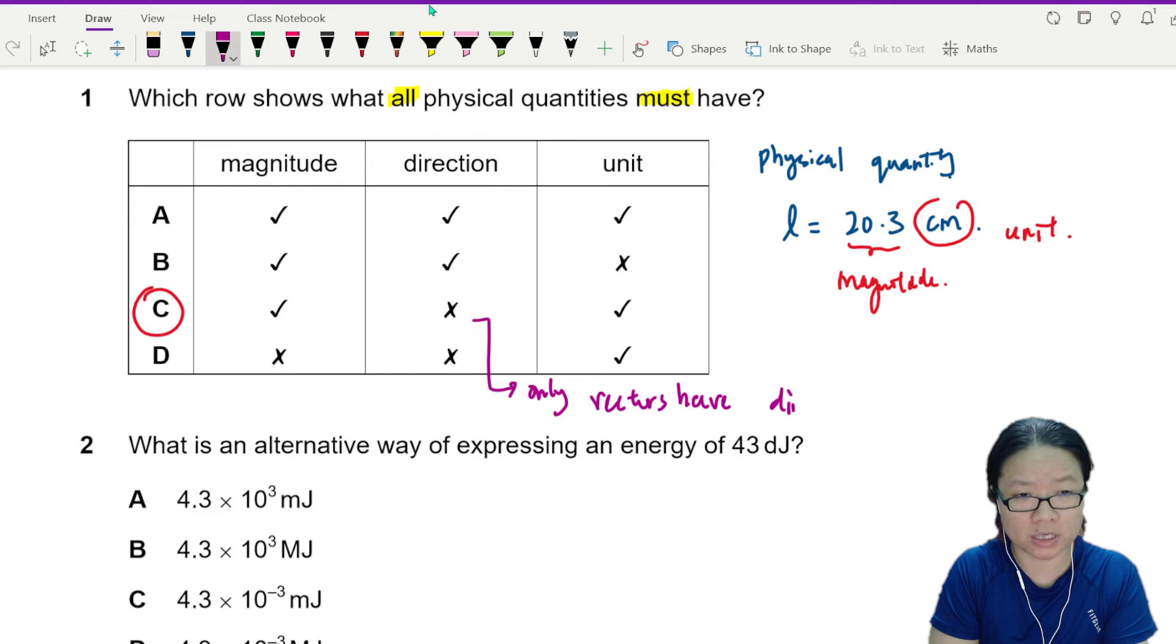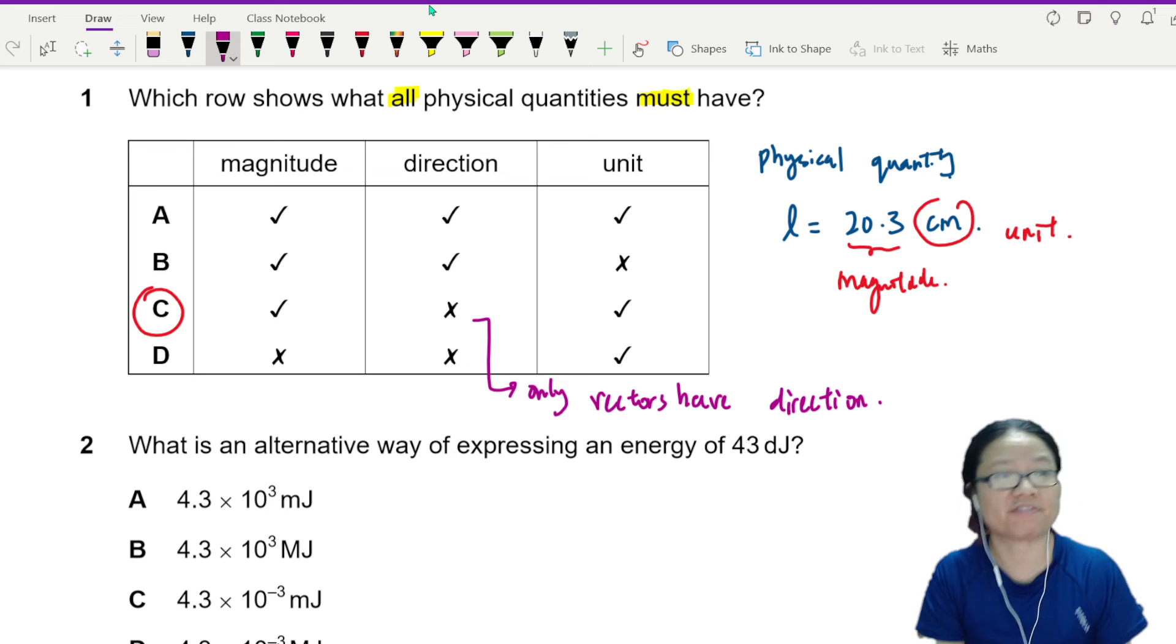So it's not compulsory. Some physical quantities will have direction, and some physical quantities won't have direction. So you need to read the word must.